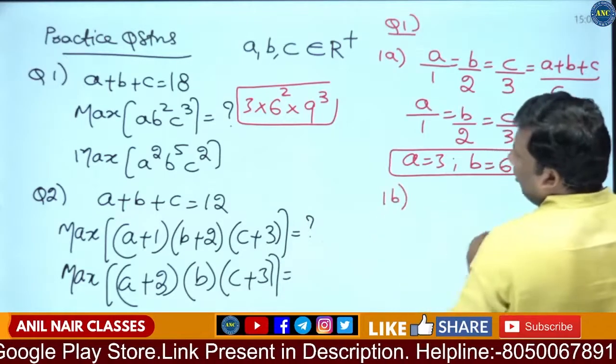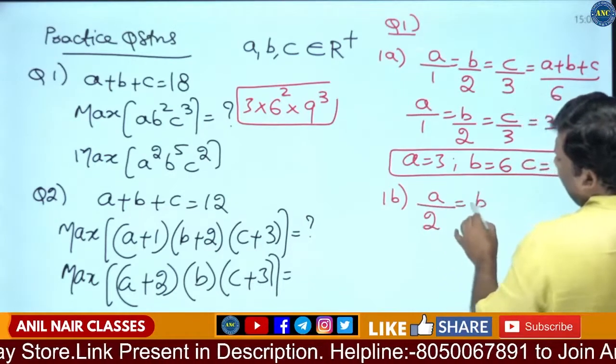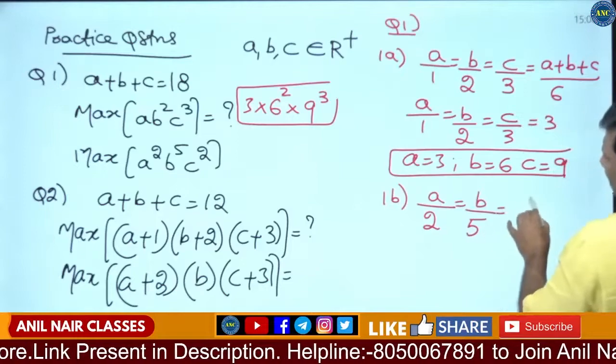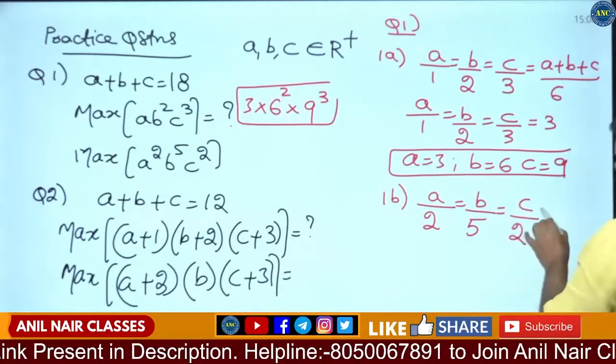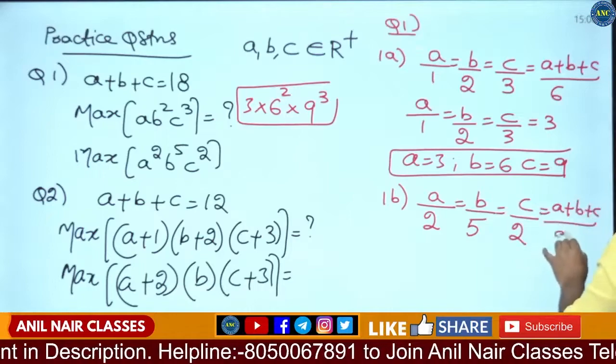1B: A by degree of A it is 2, B by degree of B it is 5, C by degree of 2 it is 2. A plus B plus C by 7 plus 2 is 9.